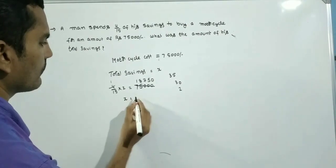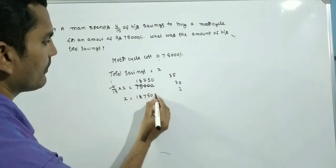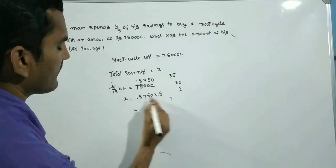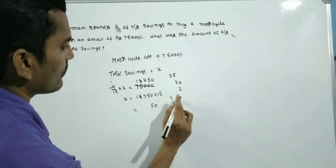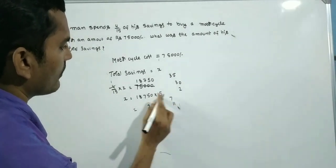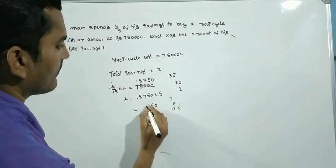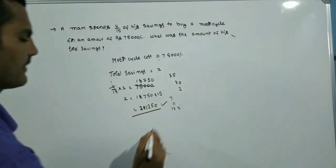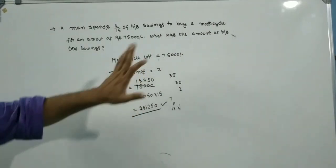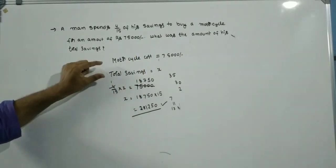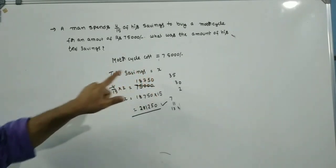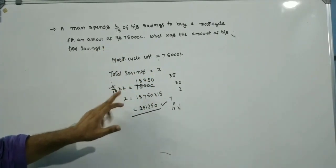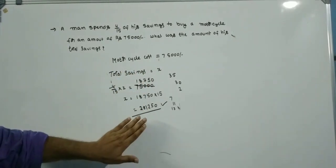Then X equals 18,750 into 15, which gives a total savings of Rs. 281,250. We assumed total savings as X, used the equation 4/15 of X equals 75,000, and calculated the total savings of that person.